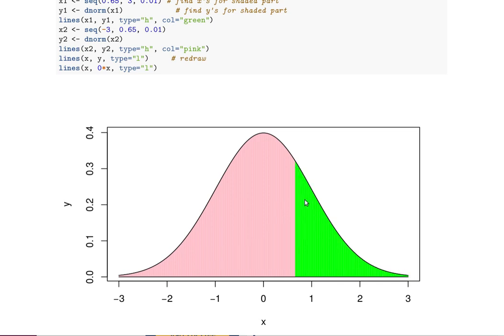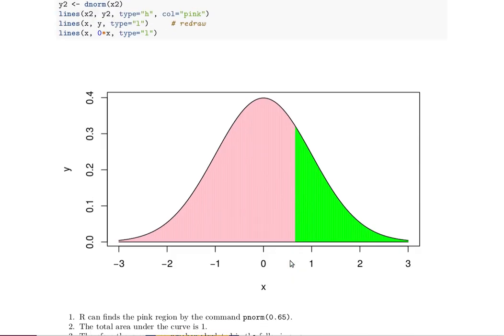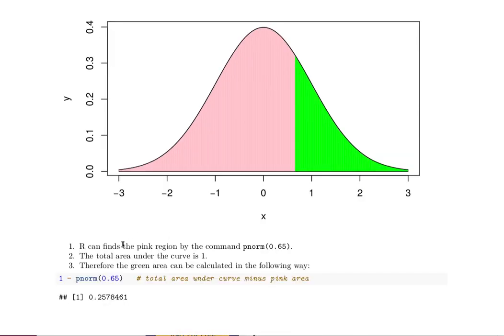Okay, so R can find that pink area and the total area under the curve is 1, and so therefore the green area can be calculated by taking 1, the total area under the curve, minus the pnorm of 0.65.